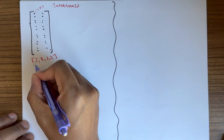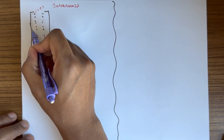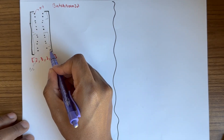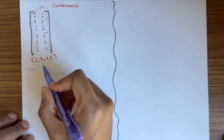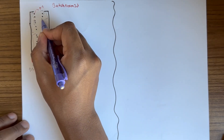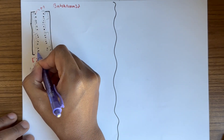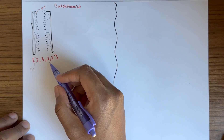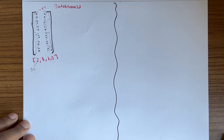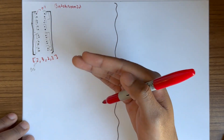The first 2 from the left is the batch size, meaning we have two images. Each image has three channels. A typical image has three channels — RGB.